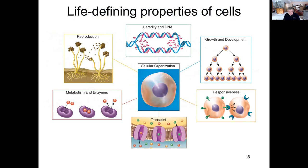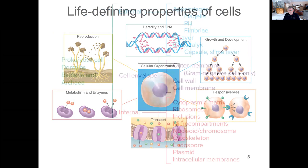This figure describes the fact that all cells have the ability to reproduce, that they grow and develop, respond to environmental cues or chemicals, and involve the movement of materials across their cell membrane. This is a general guideline that applies to all cells, whether prokaryotic or eukaryotic.